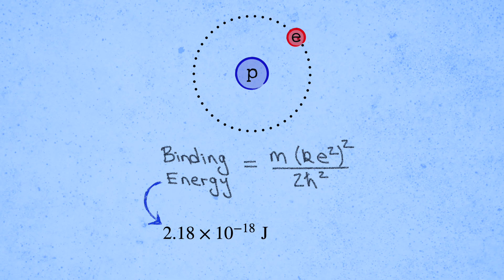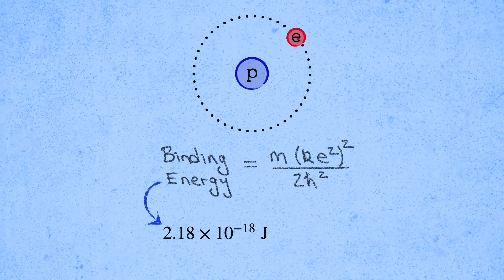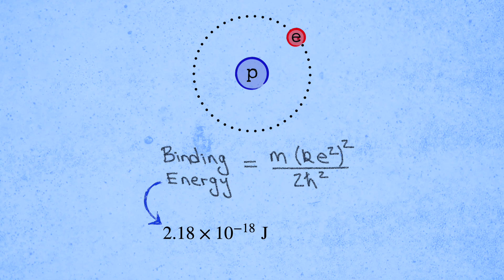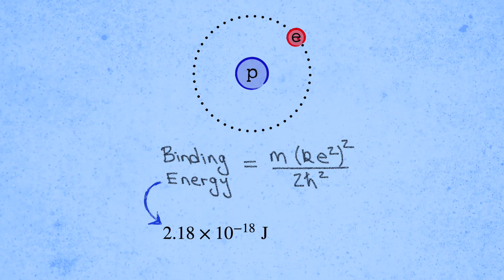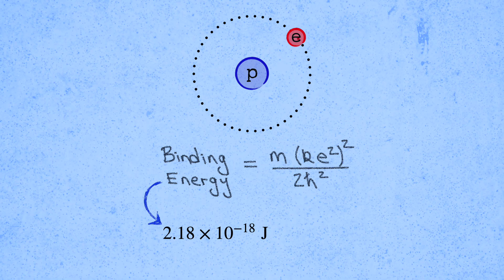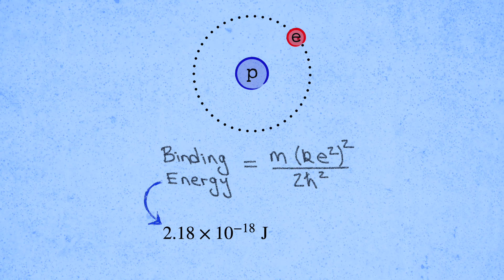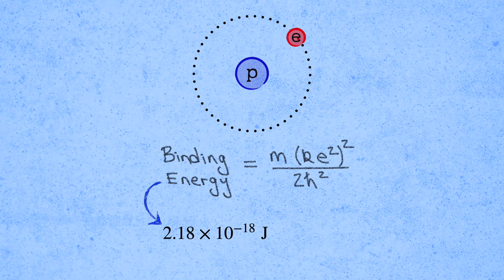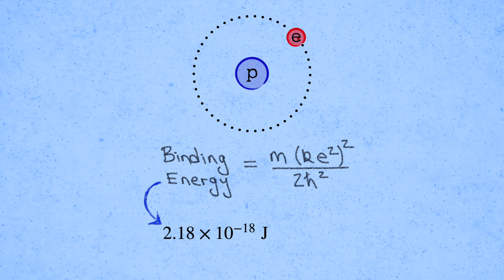As always, dimensional analysis can't tell us about unitless factors like this too, but it again got us almost all the way to the answer while needing to know next to nothing about quantum mechanics. Now go look up the solution of the Schrodinger equation for the hydrogen atom in a quantum mechanics textbook for the exact derivation and you'll appreciate just how efficient dimensional analysis is.